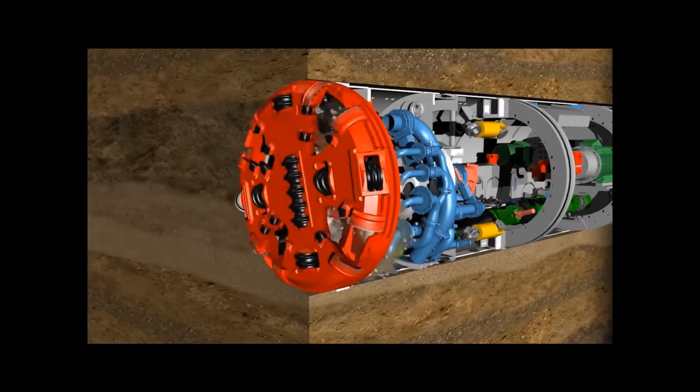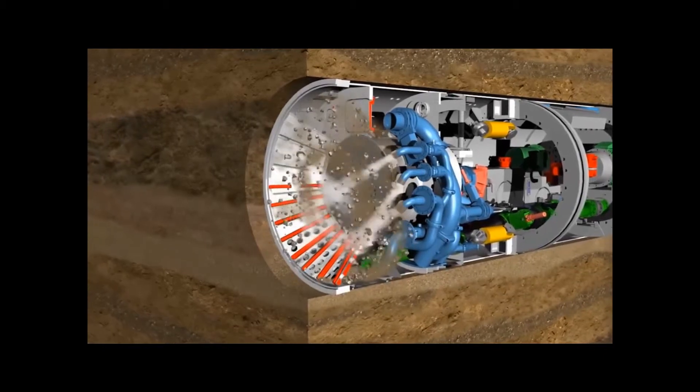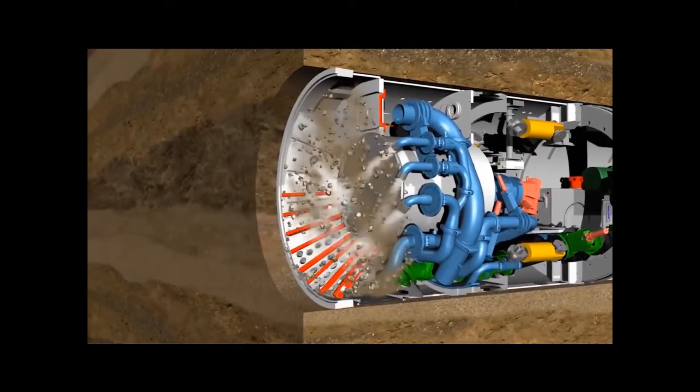Through a nozzle system in the shield, the liquid is returned to the excavation chamber. A closed slurry circuit is thus created, resulting in a continuous advance.